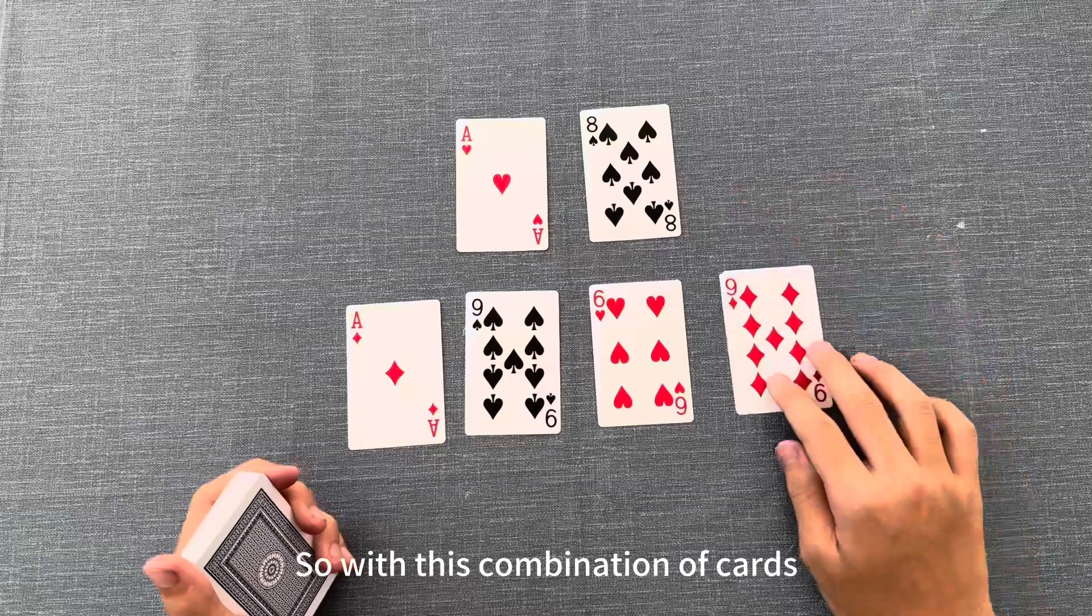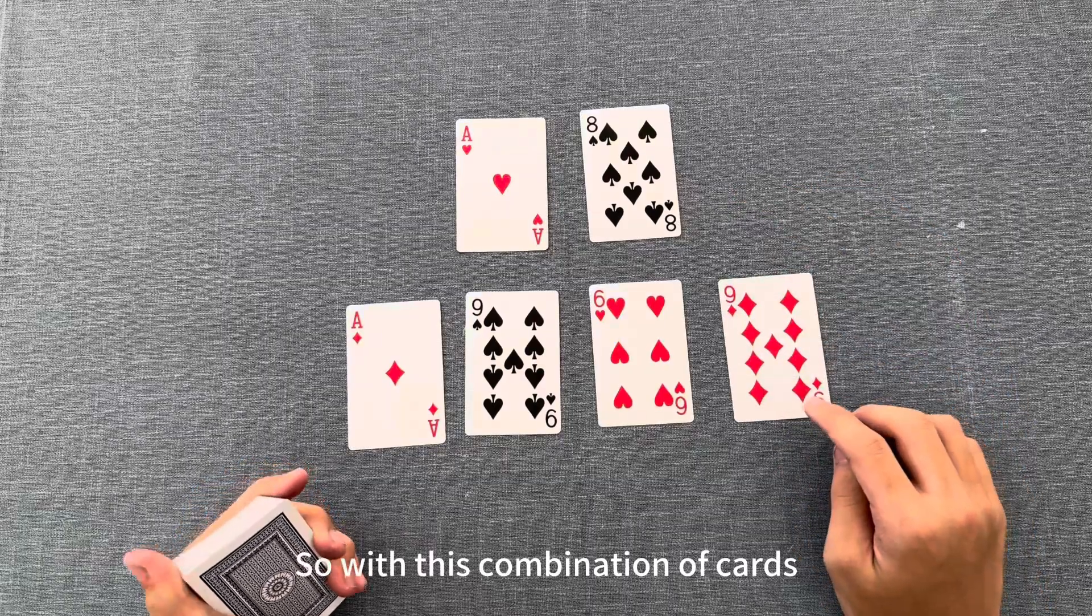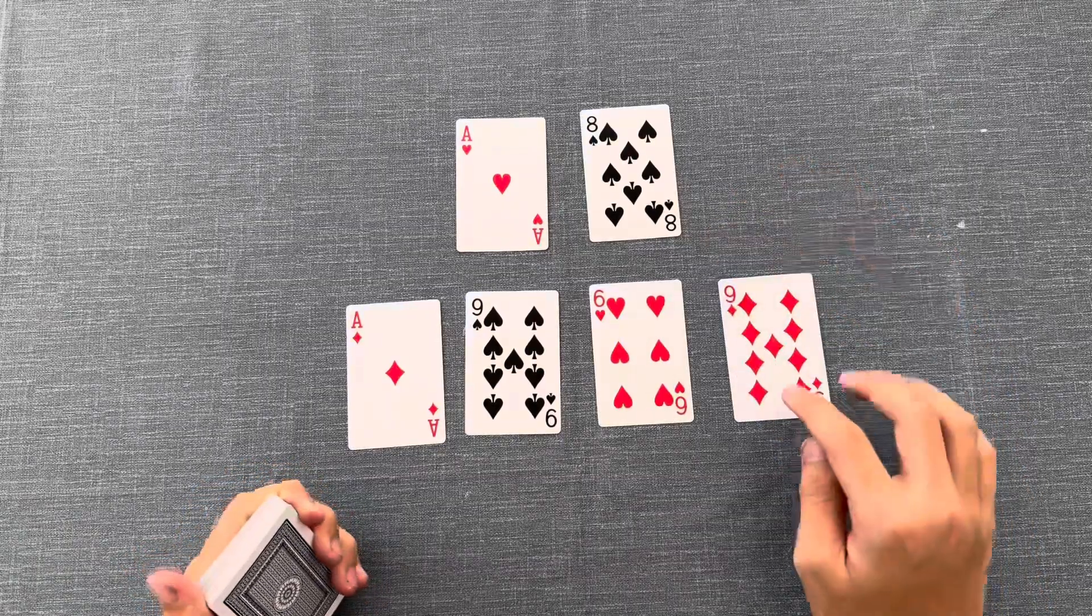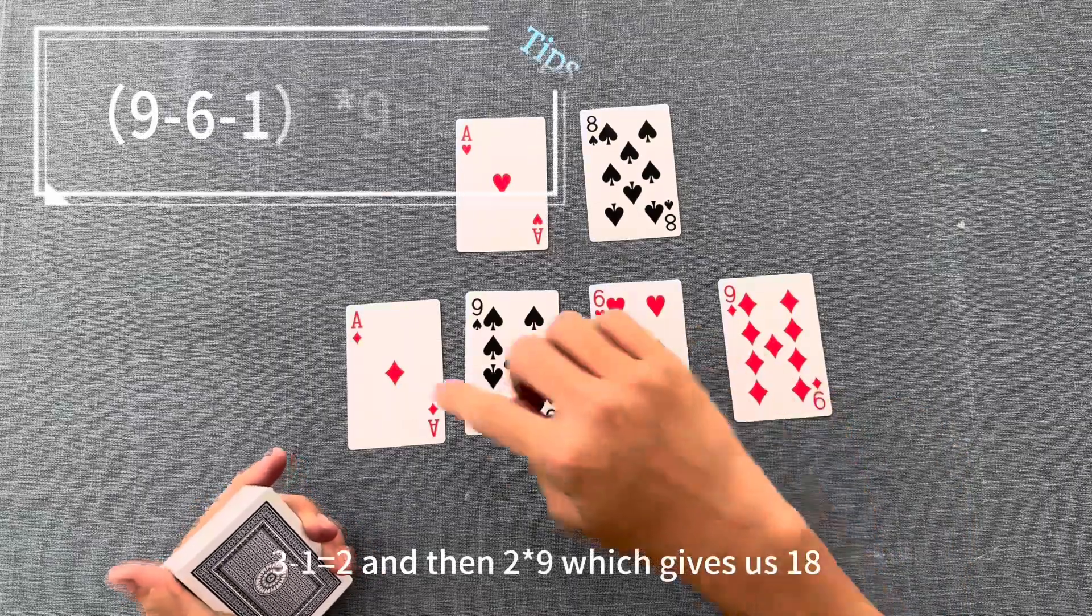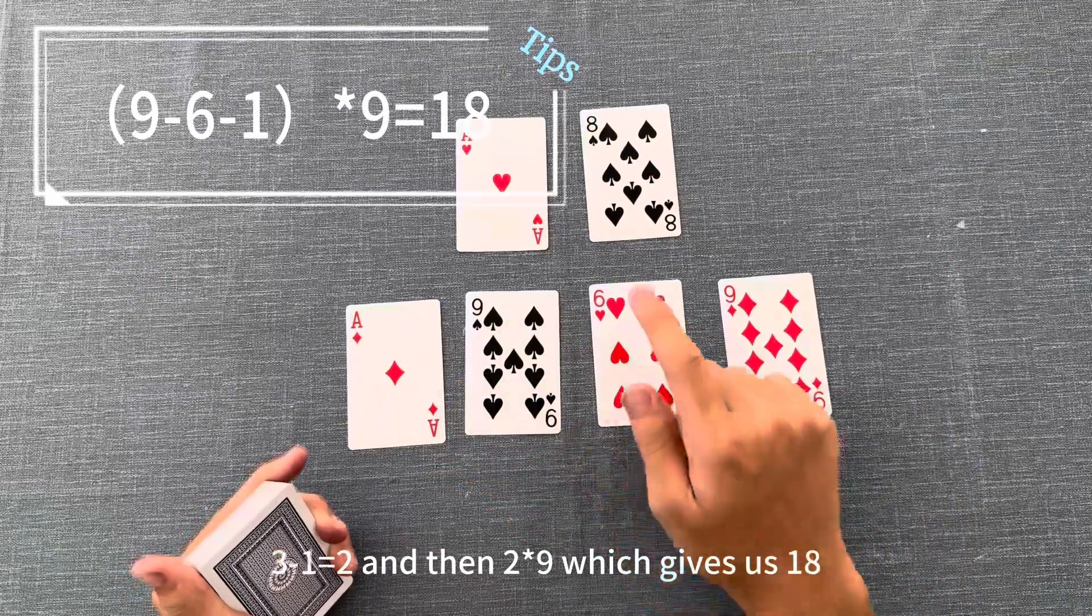With this combination of cards, there is a way to make 18, which is 9 minus 6 equals 3, 3 minus 1 equals 2, and then 2 times 9, which gives us 18.